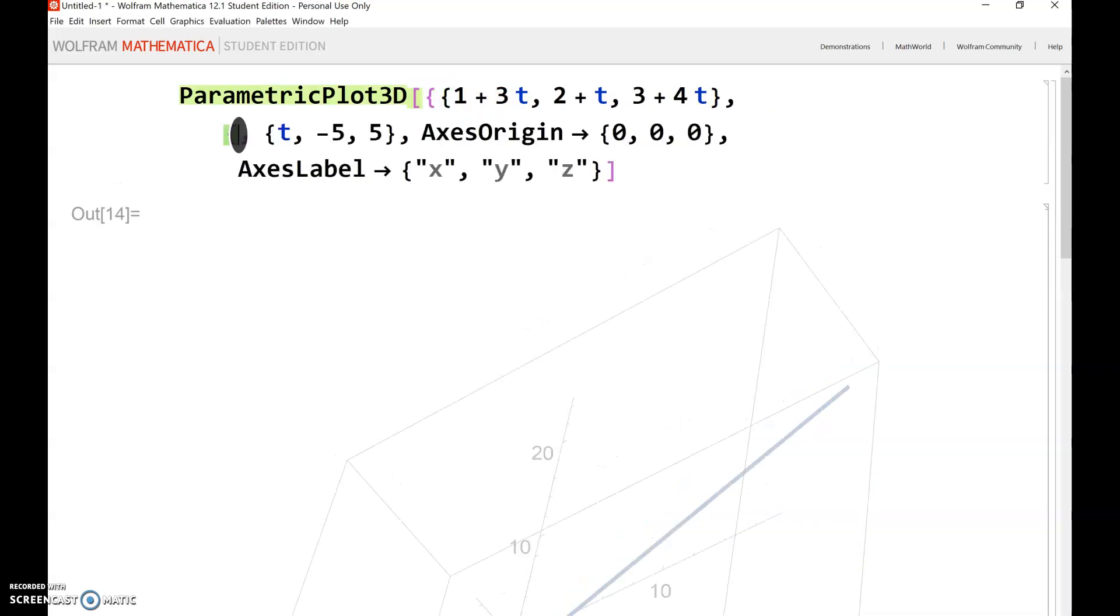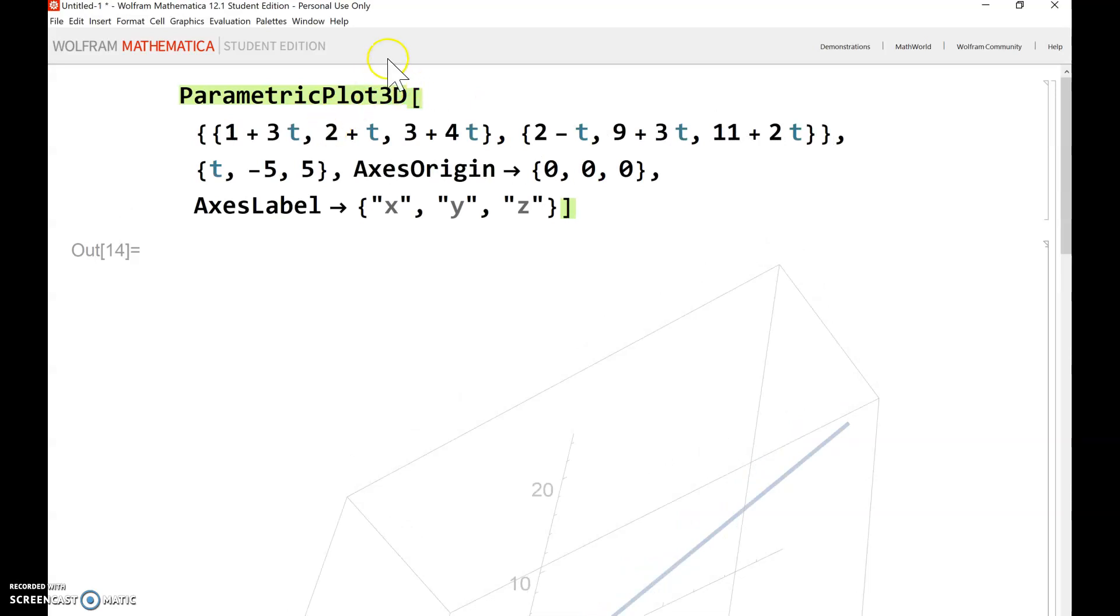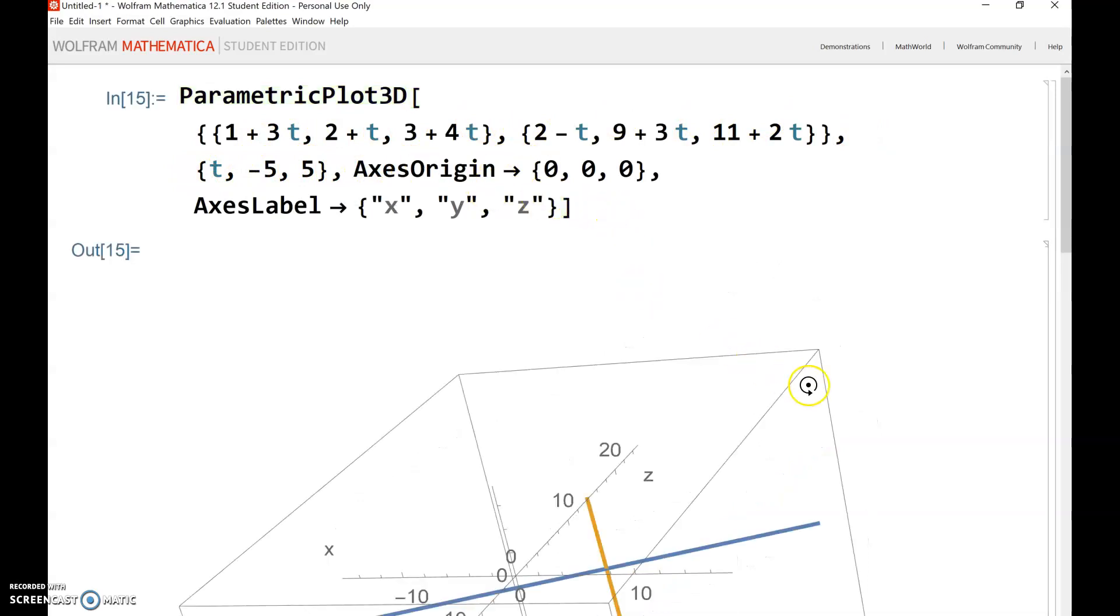And then comma, and then curly brackets, and type in your next three equations. So I've got our next three equations: x=2-t, but again don't put in the x. y=9+3t but don't put in the y, and separate with a comma. And then z=11+2t. Curly bracket and another curly bracket, because now I've got a list of lists. I've got two separate sets of parametric equations. Same values for t, same options. Now let's press shift enter.